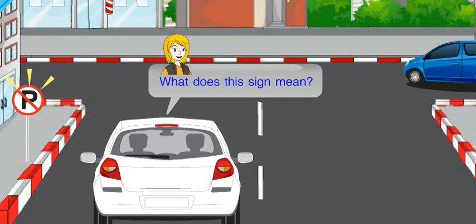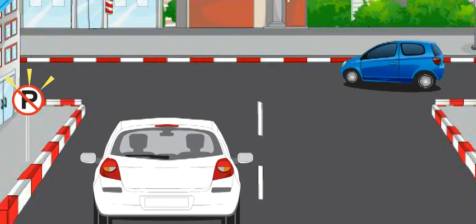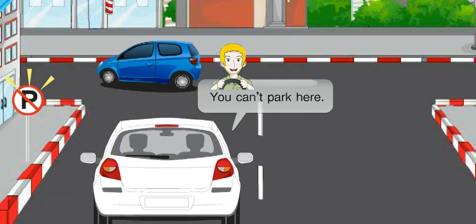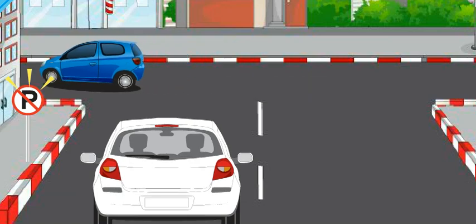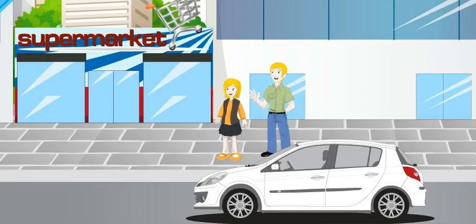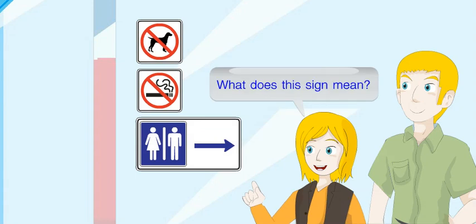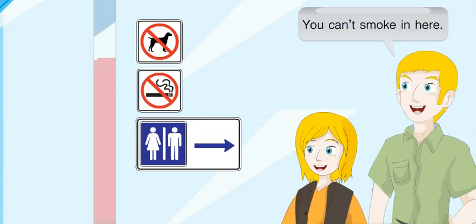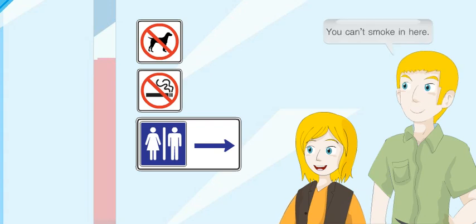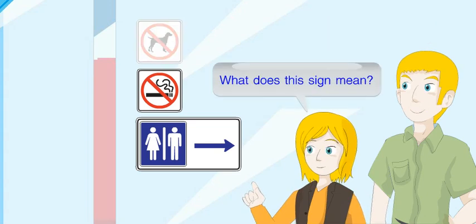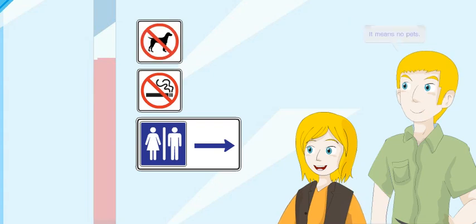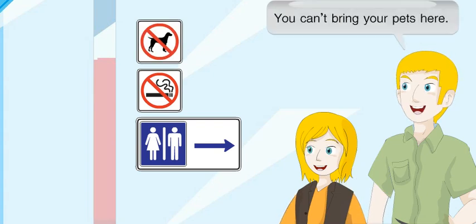What does this sign mean? It means no parking. You can't park here. We're here. What does this sign mean? It means no smoking. You can't smoke in here. What does this sign mean? It means no pets. You can't bring your pets here.